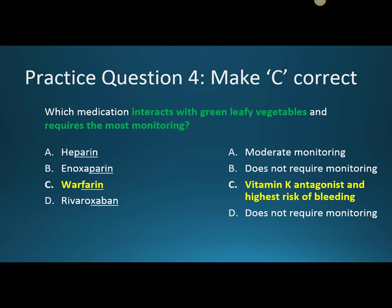Then we are talking about warfarin on this specific slide. Which medication interacts with green leafy vegetables and requires the most monitoring? Our green leafy vegetables are going to contain a lot of vitamin K, and vitamin K is going to help our blood clot. Specifically, warfarin works to decrease our vitamin K factors, specifically 2, 7, 9, and 10. So warfarin is going to interact with a lot of our green leafy vegetables. It's not that patients can't have these green leafy vegetables — it's just that we want to make sure that they're keeping the amounts consistent from week to week. Also, warfarin out of the list of medications here does have the highest risk of bleeding, so therefore it does require the most monitoring.